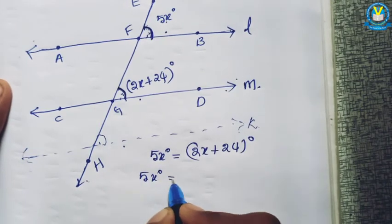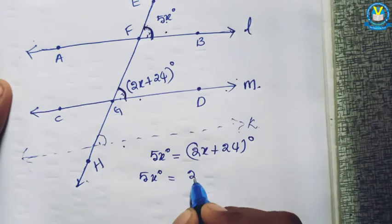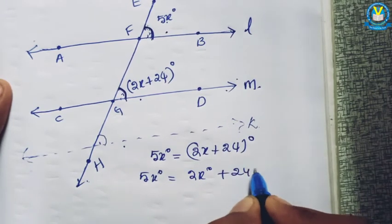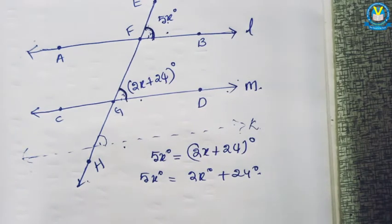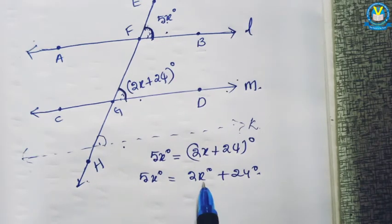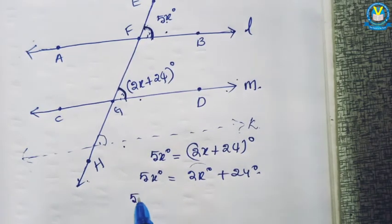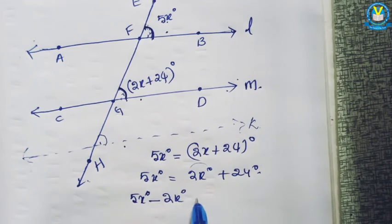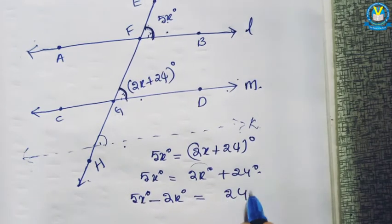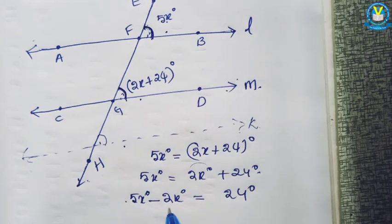5x degrees equal to 2x plus 24 degrees. Here it is an equation. I can combine all the x variables. So 2x comes to this side — here it is the positive sign, after moving this side negative — minus 2x. So 5x minus 2x, both having different signs, subtraction: 5 minus 2 gives 3x.